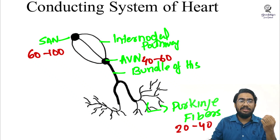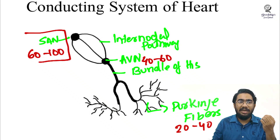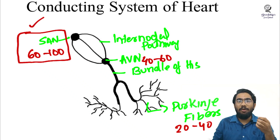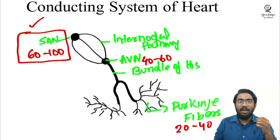Since the sinoatrial node produces signals at the highest rate, the heart works at that rate. Therefore, the sinoatrial node is otherwise known as the pacemaker of the heart.